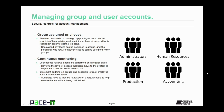The best practice is to create group privileges based on the principle of least privilege — that is, the minimum level of access required in order to get the job done. Specialized privileges can be assigned to groups and the personnel who require those privileges can be assigned to the groups. Continuous monitoring is another account management best practice. User access reviews should be performed on a regular basis to help ensure that the levels of access are correct. Account auditing should also be done. Implement auditing on groups and accounts to track employee actions, and review audit logs regularly to help ensure that security is being maintained.